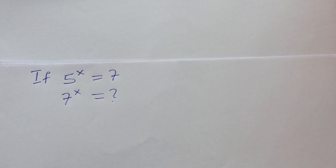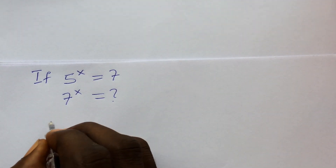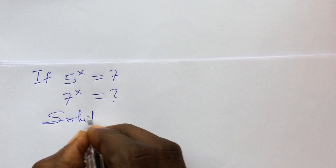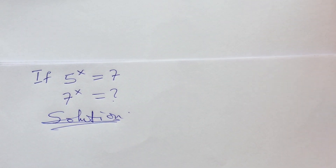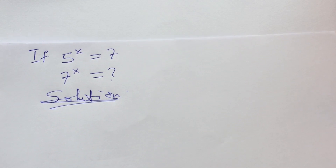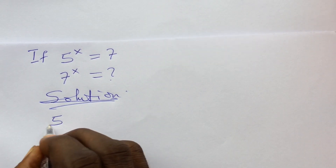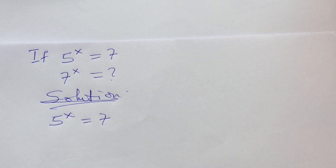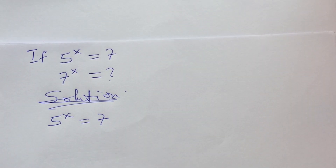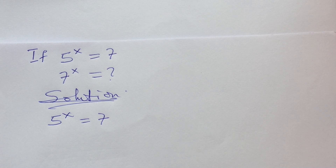Let's take our solution to this simple algebraic challenge. We put down our question, which is 5 to the power of x equals 7. From here we're going to take the natural log of both sides of the equation, which is the ln base e.